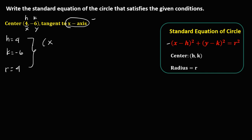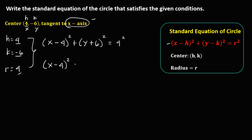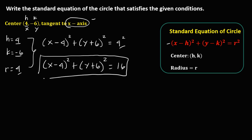Since h is positive 4, we have x minus 4, to the power 2. Plus y — since k is negative 6, this becomes positive 6 — to the power 2. Equals the radius 4, to the power 2. Simplify: x minus 4 to the power 2, plus y plus 6 to the power 2, equals 4 squared, which is 4 times 4 = 16. This is now the standard equation of this circle.